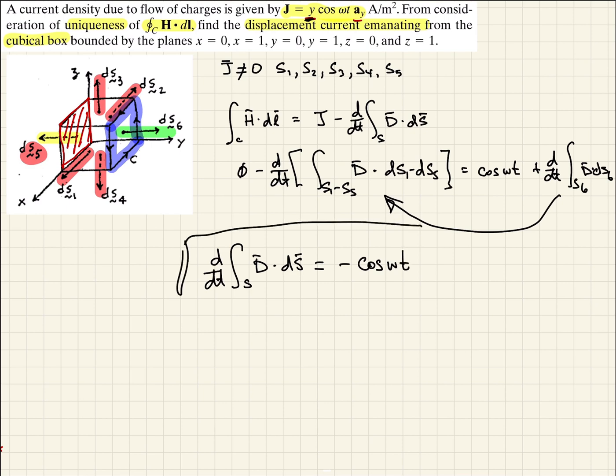So this is what we've calculated then to be an expression for the current density emanating from this surface. And this should make sense, right?